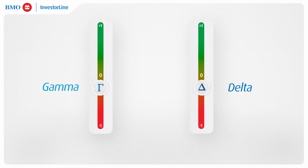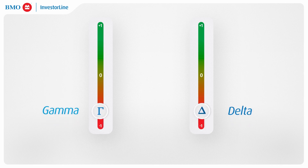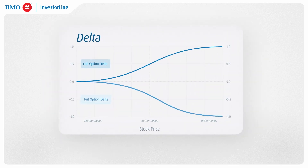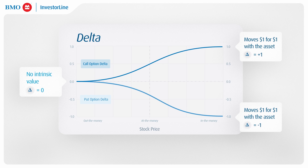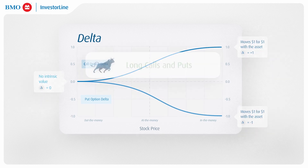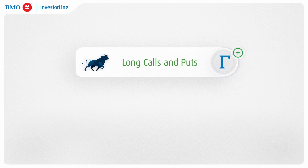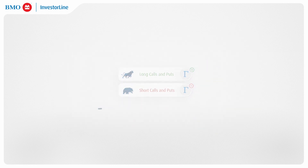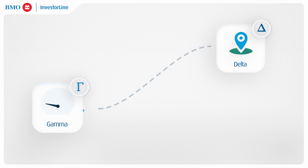Gamma operates within the same minus 1 to plus 1 range as delta. Its role is pivotal in pushing delta towards either 0 or 1 — representing an option with no intrinsic value (delta of 0) or one that moves dollar for dollar with the underlying asset (delta of 1). Both long calls and puts have positive gamma, while short calls and puts have negative gamma. If delta is our destination, gamma is the acceleration towards that destination.